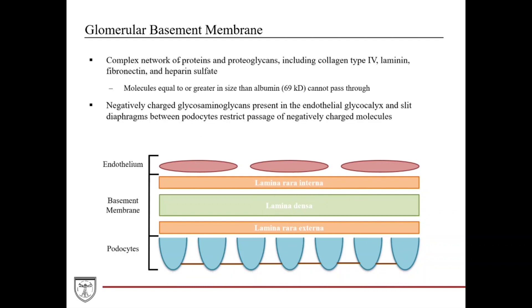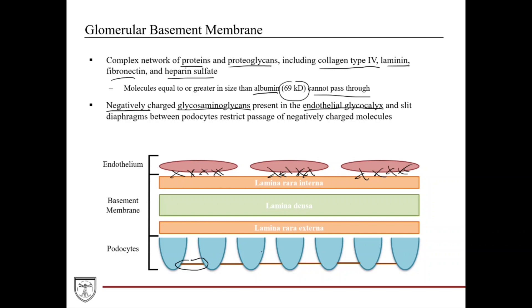The glomerular basement membrane is a complex network of proteins and proteoglycans including collagen type 4, laminin, fibronectin, and heparin sulfate — the high-yield ones to remember. Molecules equal to or greater in size than albumin (69 kilodaltons) cannot pass through. Negatively charged glycosaminoglycans present in both the endothelial glycocalyx and the slit diaphragms between the podocytes help to restrict the passage of negatively charged molecules.